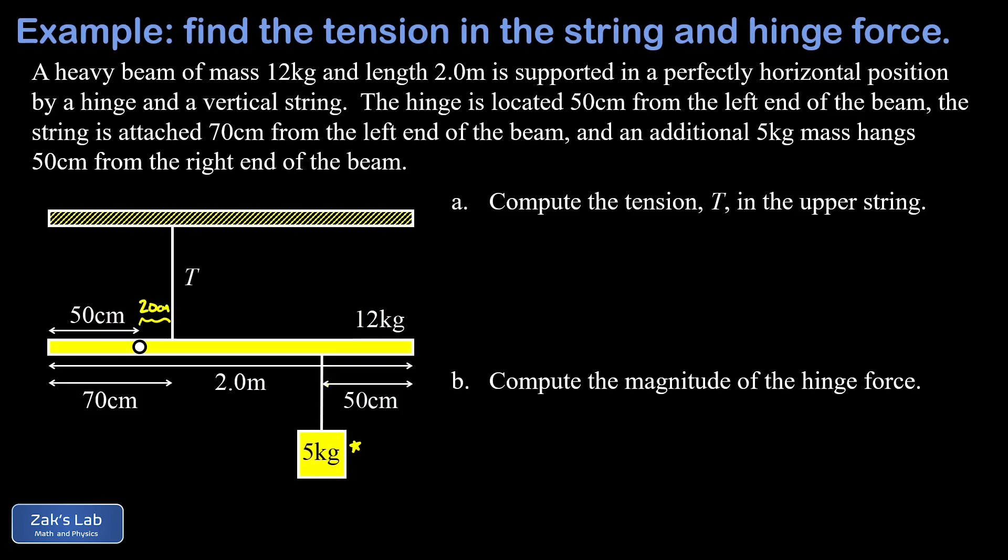We're also going to need to identify the center of mass of this uniform rod because that's where gravity acts for the purpose of computing the torque exerted by gravity. So the center of mass is about right there and so that's a distance of 50 centimeters from our hinge because the center of mass is at the 1 meter mark for this 2 meter long beam.